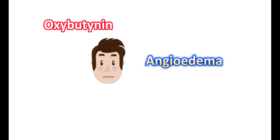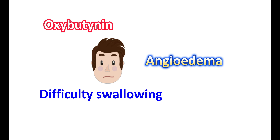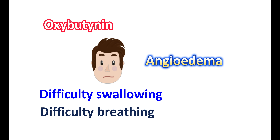Oxybutynin can produce angioedema, which can be observed on the first or subsequent doses when taken by oral route. This may result in swelling of the face, tongue, and pharynx, as well as difficulty swallowing and difficulty breathing. This is a hypersensitivity reaction associated with oxybutynin. If you observe any symptoms of angioedema, this medication should be discontinued and immediately treated to avoid fatal conditions.